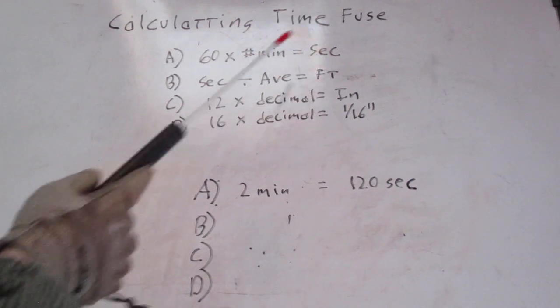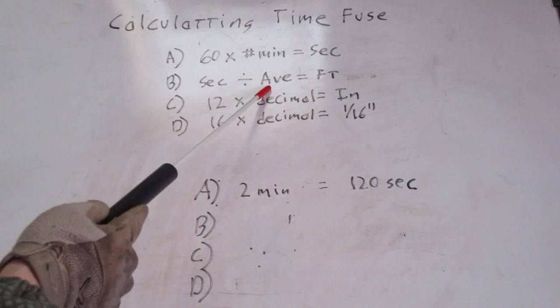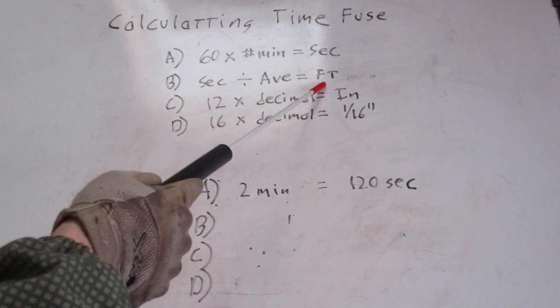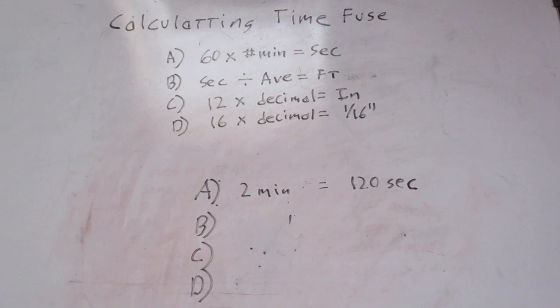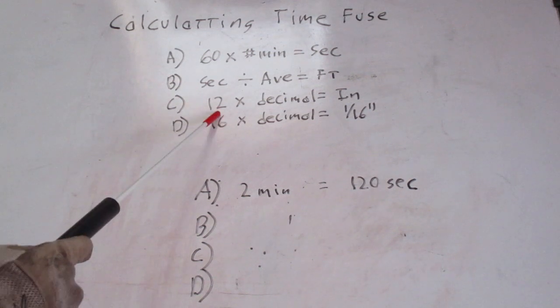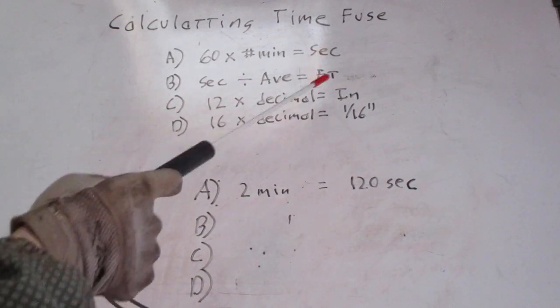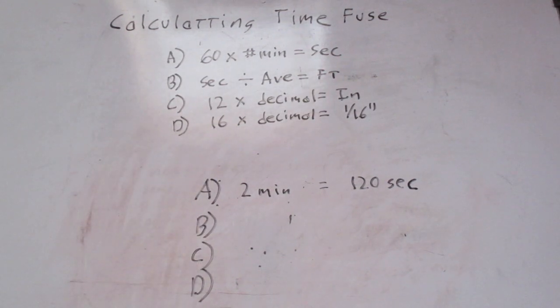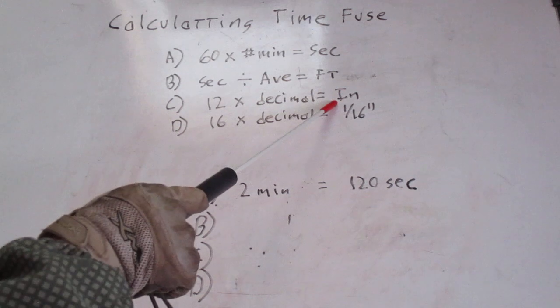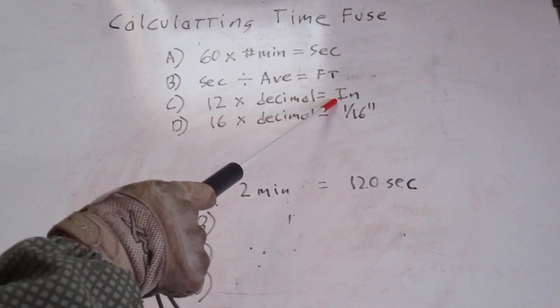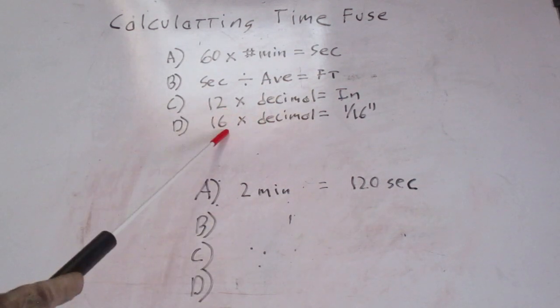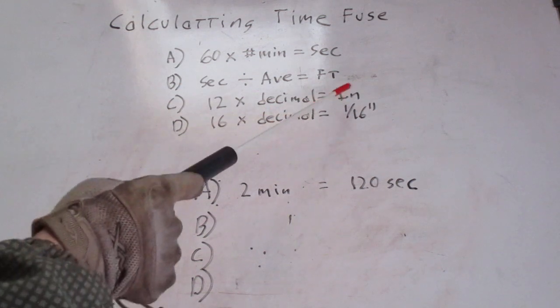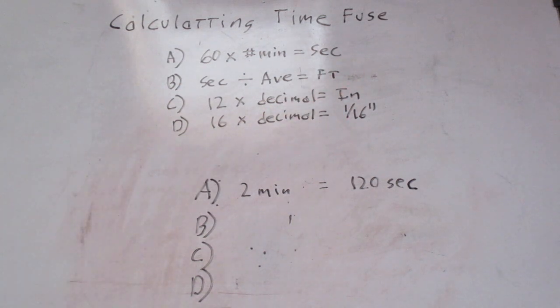You take your total seconds, divide it by the average per foot, and that'll give you the number you need for the total feet. You take 12 times the decimal from this calculation and bring it down to only two or three places past the decimal point. You take that decimal, you'll get your number of inches and possibly another decimal. You take 16 times the decimal from this one and that'll give you 16ths of an inch.